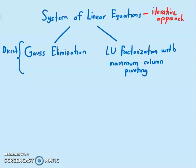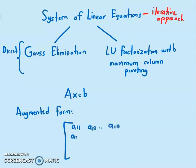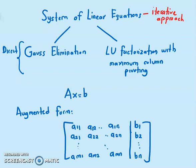If you recall, a system of linear equations that you can solve using Ax equals b. The augmented form can be written in this form: I have a11, a12 up to a1n, a21, a22 up to a2n, and then continuing to am1, am2 up to amn as the matrix.